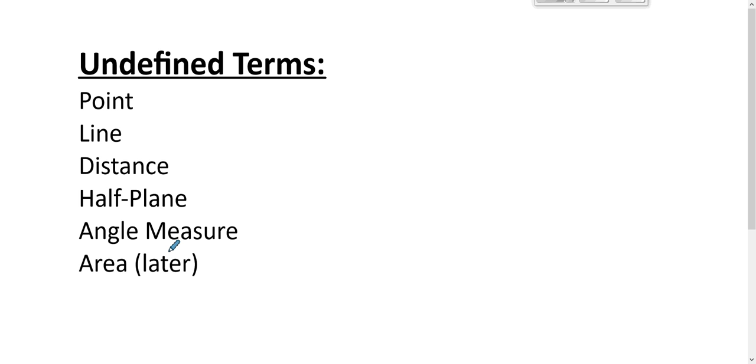We don't define angle measure. We postulate some things involving angle measure, but we don't talk about what it means to be one degree. And then we don't talk about what we mean by area. We describe a number called area, and we have properties involving area, but we don't define that term. So all of these, whatever your understanding is coming to our geometry course, you're fine.